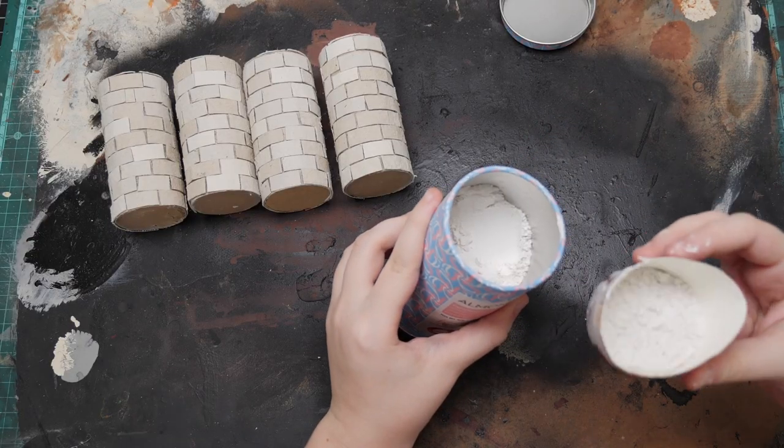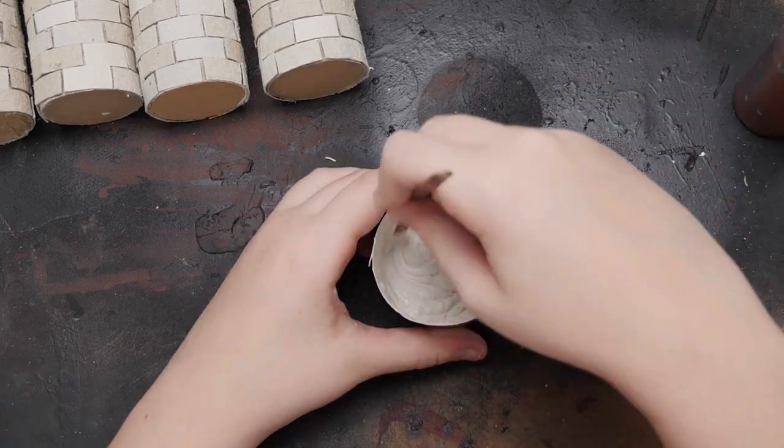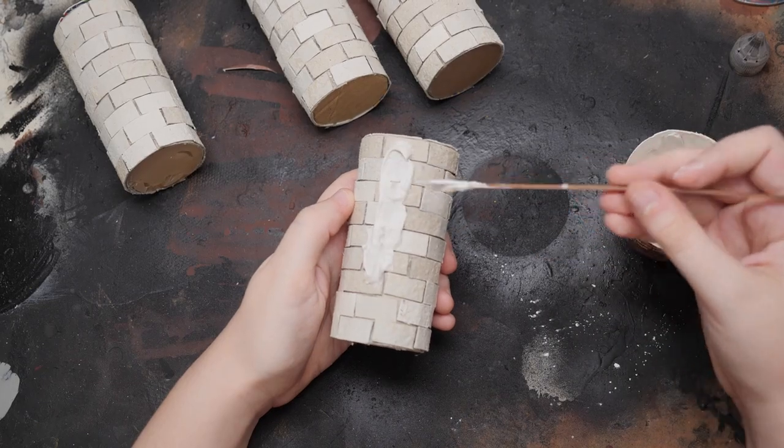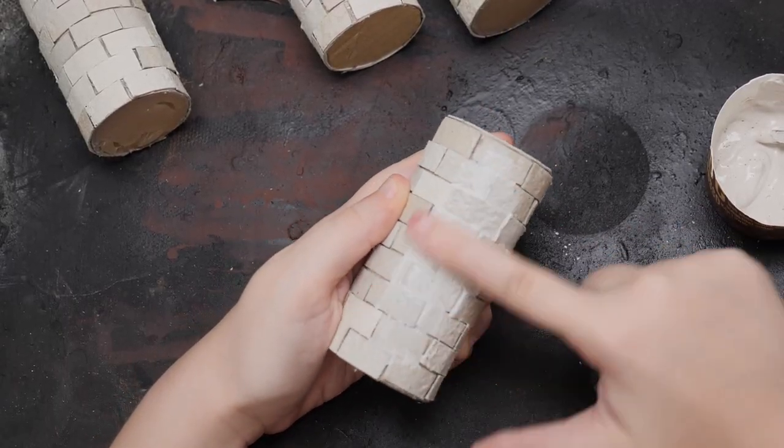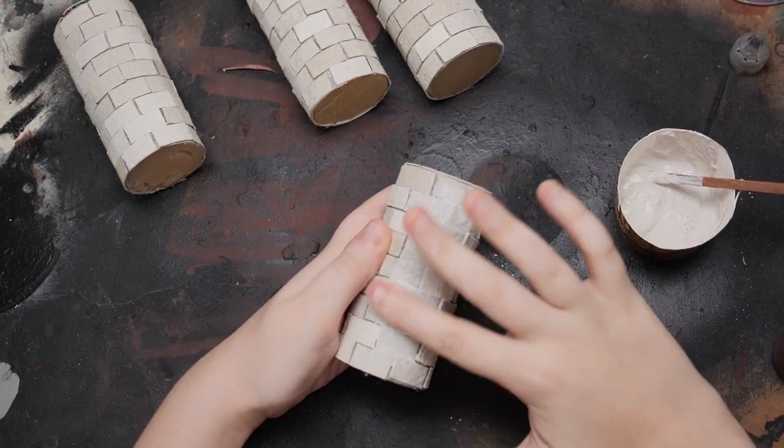Now you can technically call this done and move on to painting, but as a bonus step I wanted to fill some of the gaps between the bricks. For that I'll be using some plaster mixed to a soupy mixture and spread it all over. I then come back with more water and try to remove as much from the top surface.